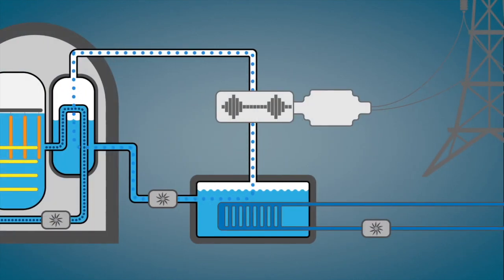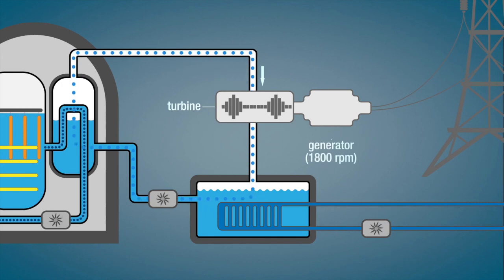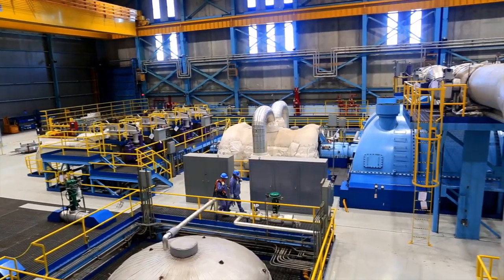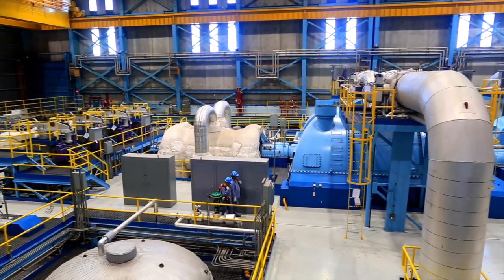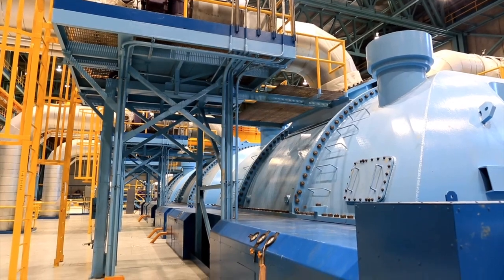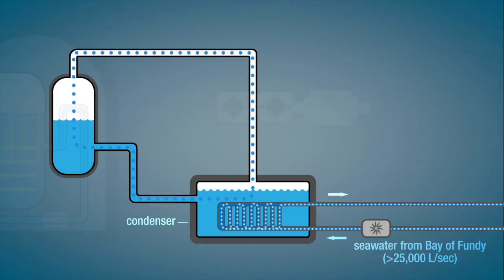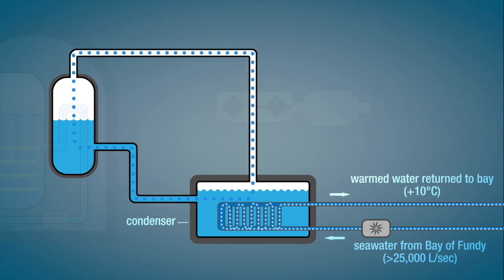Once high-pressure steam is produced, nuclear plants and fossil fuel plants generate electricity in much the same way. Steam is passed through a turbine which spins a generator, in this case at 1,800 rpm, and electricity is sent to the grid. To cool down the used steam and to keep the reactor itself cool for safe operation, Lepreau uses over 25,000 liters of water every second from the Bay of Fundy. This seawater is warmed up about 10 degrees Celsius and sent back out into the bay.